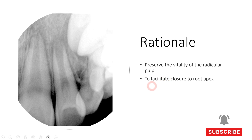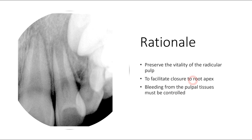Secondly, to facilitate the closure of the root apex. And lastly, bleeding from pulpal tissues must be controlled, because if there is spontaneous bleeding that is not being controlled and is continuously flowing out of the coronal chamber, that means this is not reversible pulpitis but irreversible pulpitis, and we cannot perform Svex pulpotomy. These are the rationale which give us reason to prefer Svex pulpotomy over conventional pulpotomy or root canal treatment.